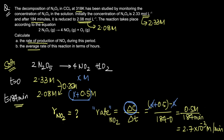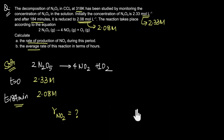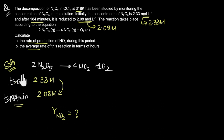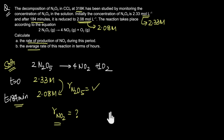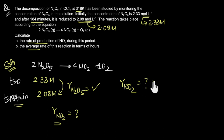Instead of solving in this way, we can also use a more direct approach. We are given the change in concentration of N2O5 over this time interval — in other words, we can calculate the rate of disappearance of N2O5 from this data — and we are asked to calculate the rate of production of NO2. Because rate is change in concentration per unit time, we can relate these rates just by looking at the balanced chemical reaction.